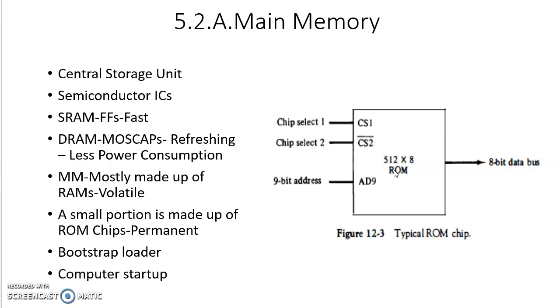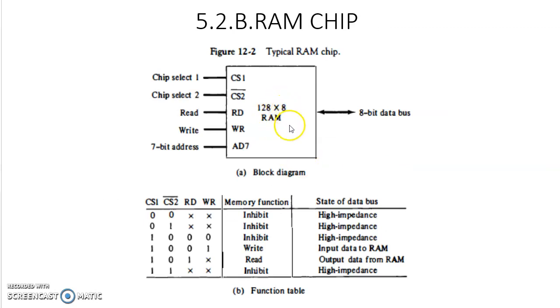You cannot write in it. But RAM is for both read and write. That is why RAM chip is called read and write memory. But the original definition is random access memory. Read and write both operations are possible. That is why two control lines are available and the size of this memory is 128 by 8.